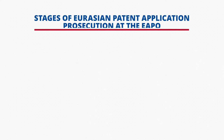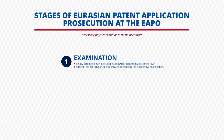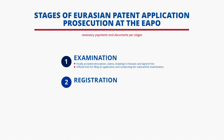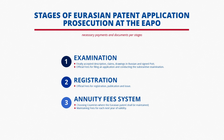The necessary fees and documentation at the EAPO are as follows. For examination: filing of application materials including the description, claims, and drawings in Russian, as well as the power of attorney executed by the applicant. Payment of official fees for filing a Eurasian application as well as the official fees for the substantive examination, which must be paid simultaneously. For registration: as soon as the decision to grant a patent for an invention is issued, the payment of official fees for the registration and issue of the patent should be made. Under the annuities fee system, after obtaining the patent, the applicant can choose which of the EAPO member states they intend to maintain the patent in for each following year of validity. The maintenance fee must be paid annually.